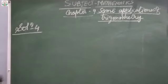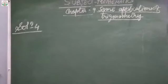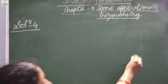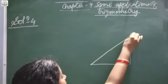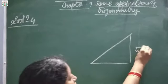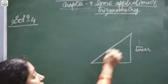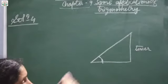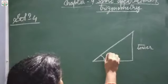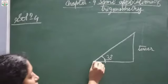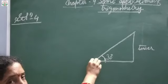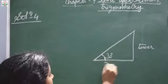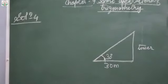Now, question number 4. The angle of elevation of the top of a tower from a point on the ground, which is 30 meter away from the foot of the tower. Suppose this is the tower. The person is standing here and seeing the top of the tower. The angle of elevation is 30 degrees and the distance from the foot of the tower to the person is 30 meter. So the base is given; we have to find the height of the tower, which is P.